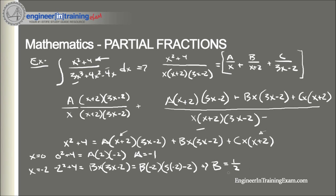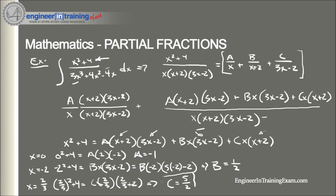Finally, to find C we plug in x = 2/3, which eliminates A and B. We get (2/3)² + 4 = C(2/3)(2/3 + 2), and we find that c = 5/2. Those are our three constants to plug back into the partial fraction decomposition and integrate.